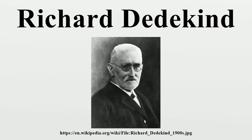Dedekind's father was Julius Levin Ulrich Dedekind, an administrator of Collegium Carolinum in Braunschweig. Dedekind had three older siblings. As an adult, he never used the names Julius Wilhelm. He was born, lived most of his life, and died in Braunschweig.